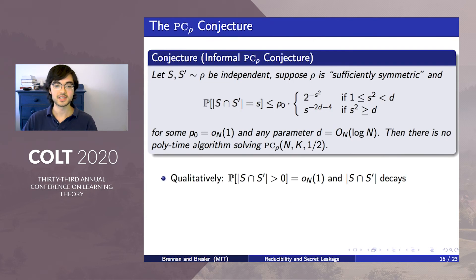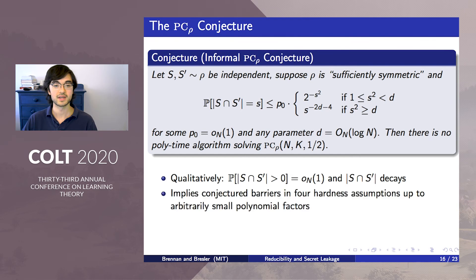Our four hardness assumptions can all be unified in a single conjecture for the computational barrier of PC-rho. Consider sampling two independent k-sets from rho. We conjecture if the PMF of their overlap is concentrated at zero and exhibits a certain hinge-like decay rate shown here, then PC-rho is hard. The conjecture computational barriers in our four variants of PC are all predicted by this conjecture up to arbitrarily small polynomial factors.